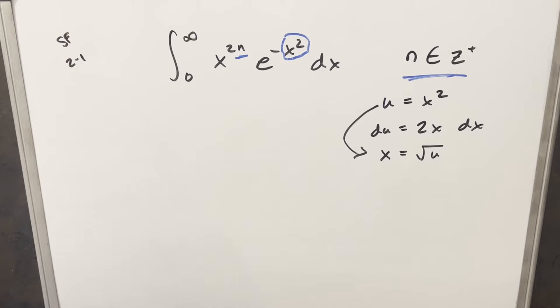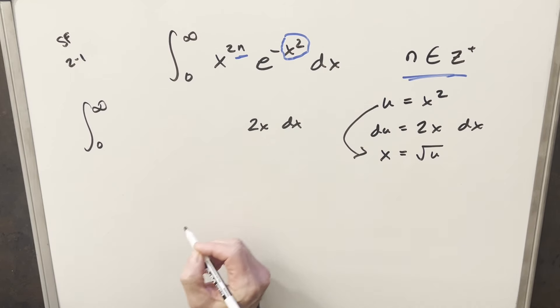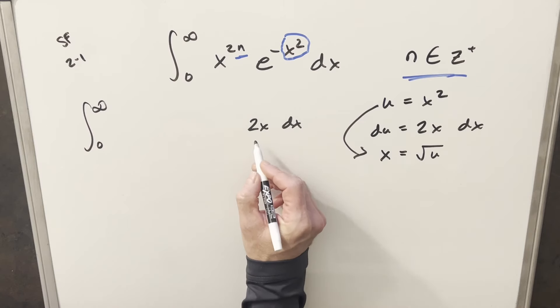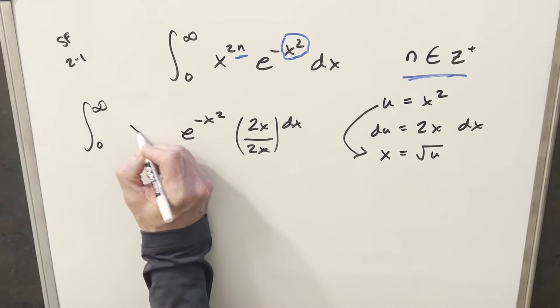Now before we substitute, I'm actually just going to rearrange things a little bit because I want to set this up. I want to set up where I have my du ready to go. So I'm going to create a 2x dx over here. But so I'm not changing it. Let's just divide by 2x. So this piece, this here will just be 1.